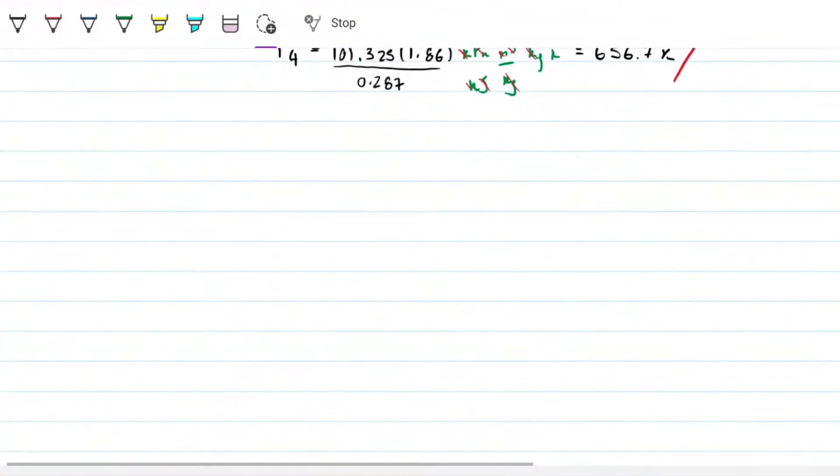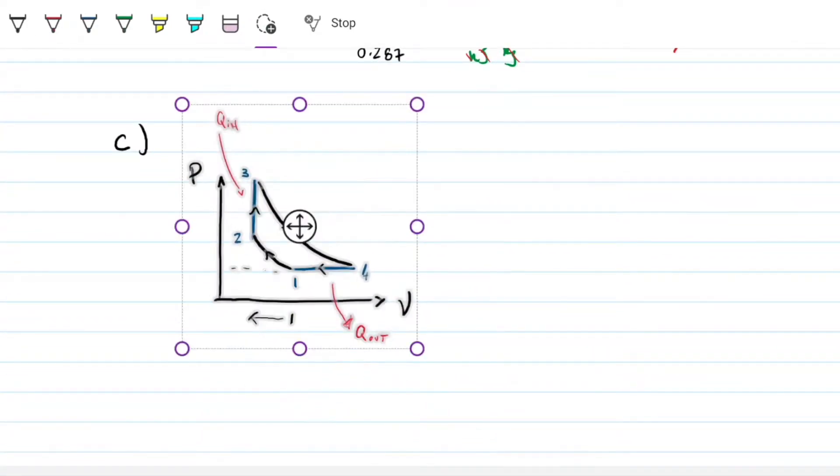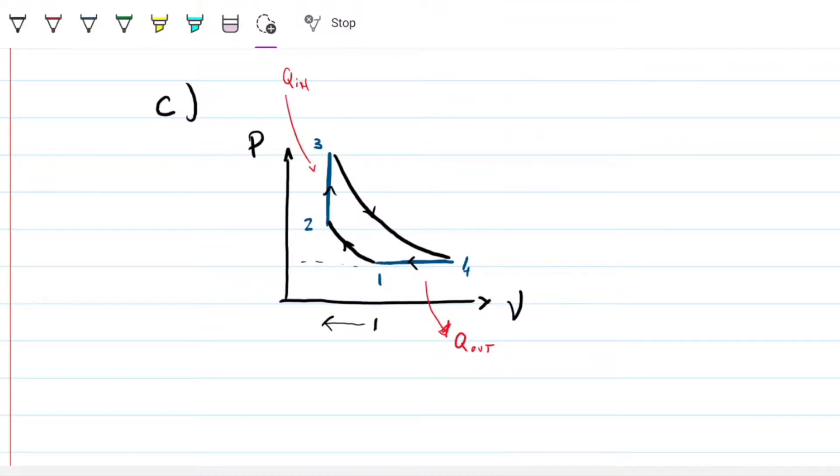Before you start calculating stuff, what we want to be sure is that we know what we're doing, right? We're not just randomly calculating, because that's when you get into trouble. So what are we looking for? We're looking for Q's in and Q's out. These two guys are adiabatic and reversible.